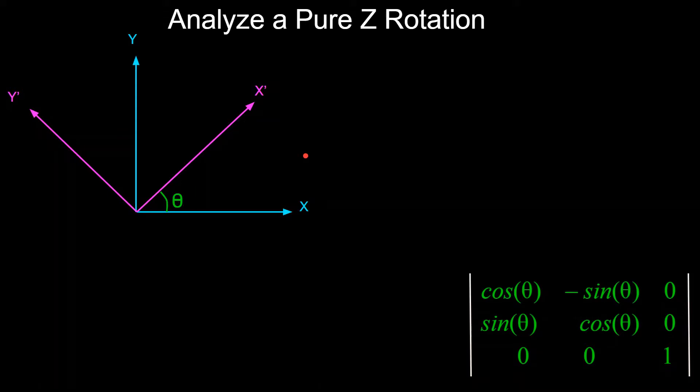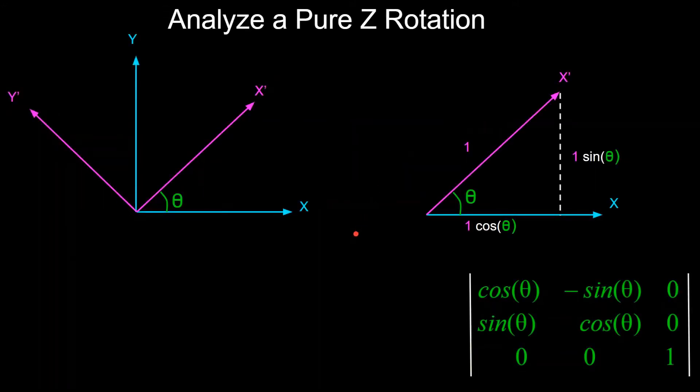So basically, we want to figure out the x-y coordinates of this rotated x' vector and this rotated y' vector. And to do this, we'll focus on the x-axis only for now, and then we'll get into the y-axis later.